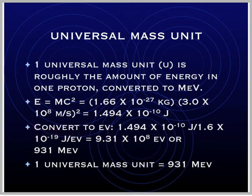And the way we do that is again, look on the reference tables, and we can see that 1.6 times 10 to the negative 19 joules equals an electron volt. So if we divide 1.494 times 10 to the negative ten joules by 1.6 times 10 to the negative 19 joules per electron volt, we would get that there are 9.31 times 10 to the eighth electron volts.